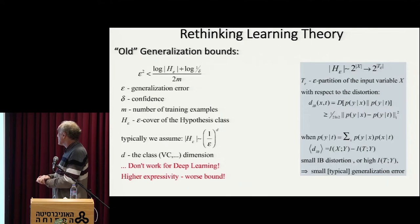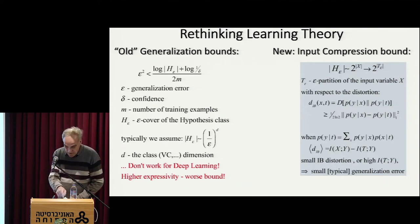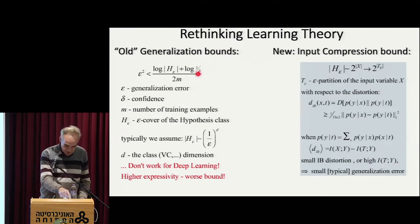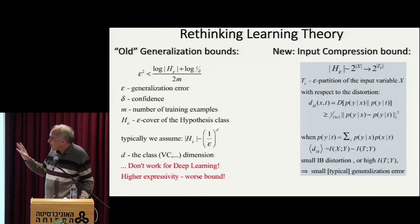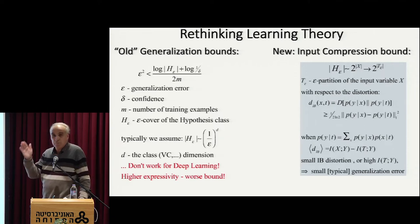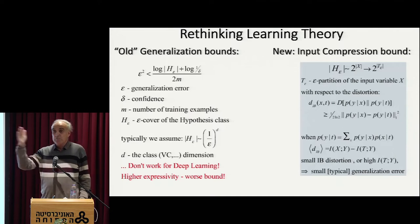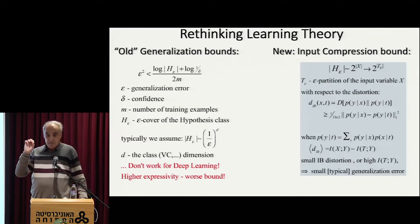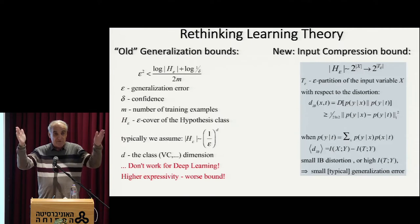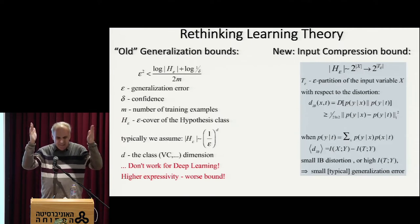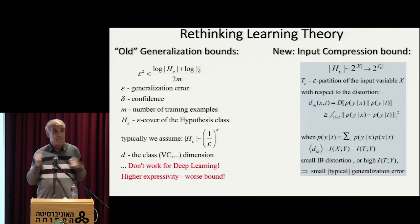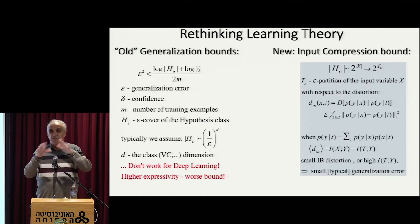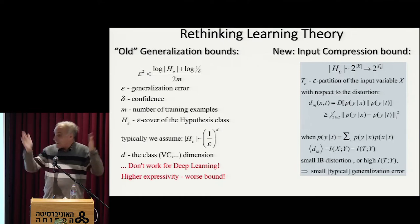The first part of theory here is really convincing you that it makes sense — that actually reducing the information about the input is helping generalization. The old type of PAC-like bounds: the generalization gap — essentially the difference between the training and the expected error — is bounded, and the square of it is bounded by essentially two numbers: the log of the cardinality of an epsilon cover of your hypothesis class, which is the main trick of Vapnik.